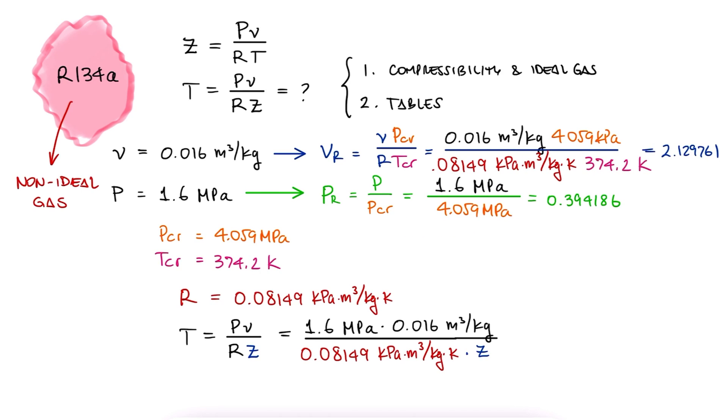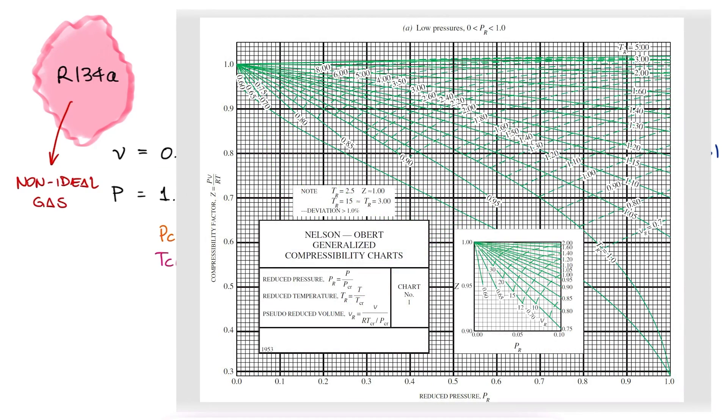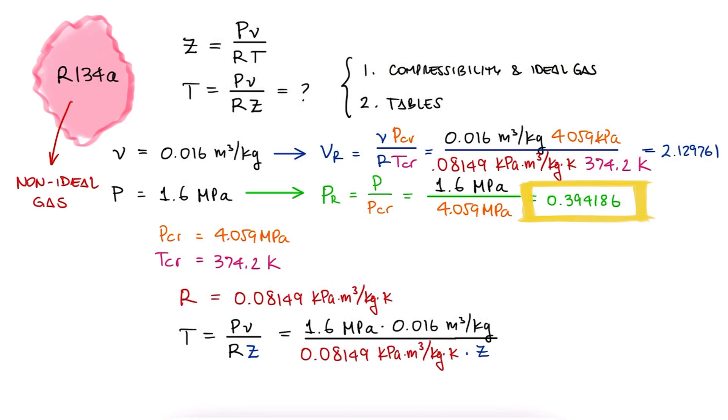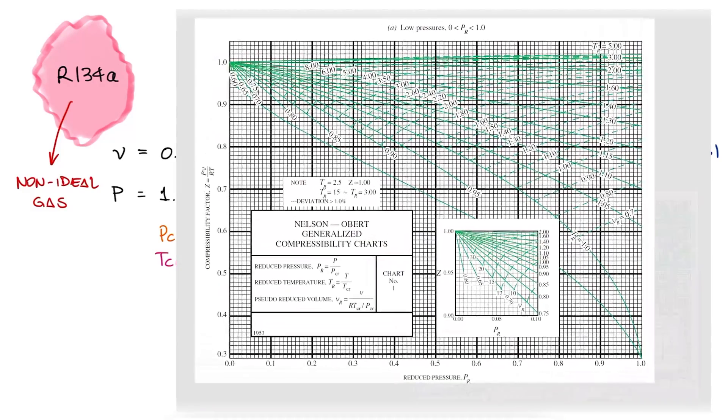These two values will be the numbers we enter our compressibility chart with. This means that we are not going to use the same chart that we used in the example from the main lecture video. That one is only used when we have temperature and pressure values. The chart that we'll use here is the second version we showed then. And since the reduced pressure is between 0 and 1, we'll use the first of the two charts we have for this version, basically the zoomed in version of it.